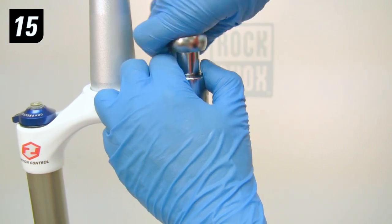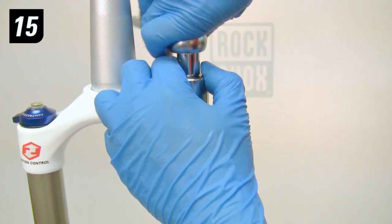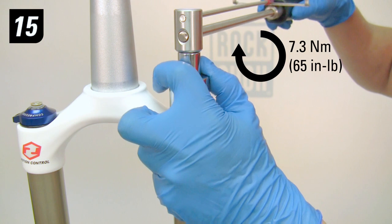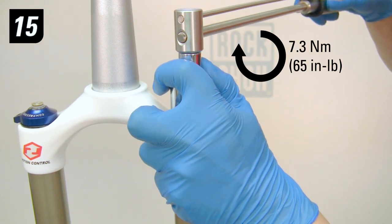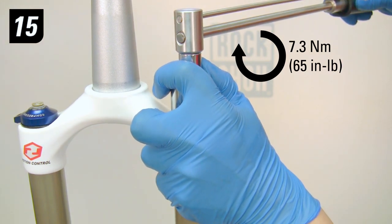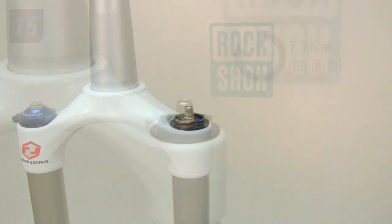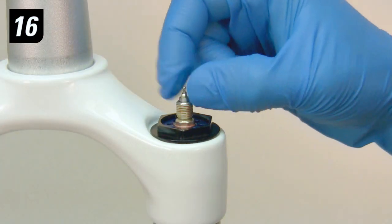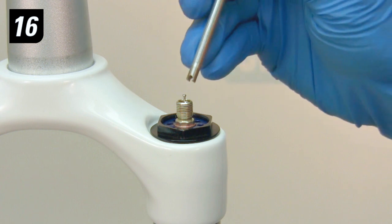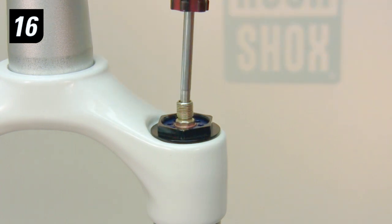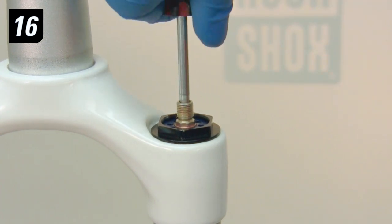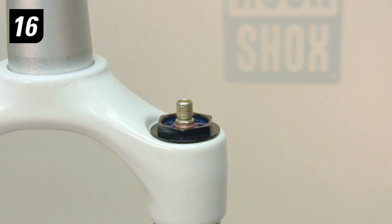Step 15. Thread the top cap into the upper tube. Then use a torque wrench to tighten the top cap to 7.3 newton meters or 65 inch-pounds. Step 16. Lightly grease a new Schrader valve core. Then use the Schrader valve tool to install the core into the top cap until it bottoms out. Do not over-tighten the valve core as this may damage it.